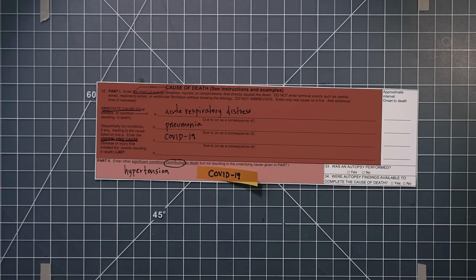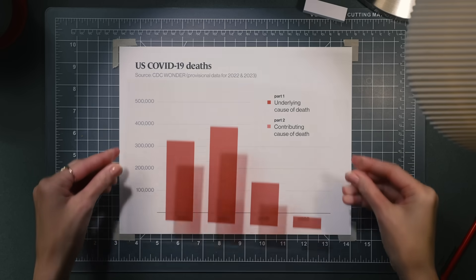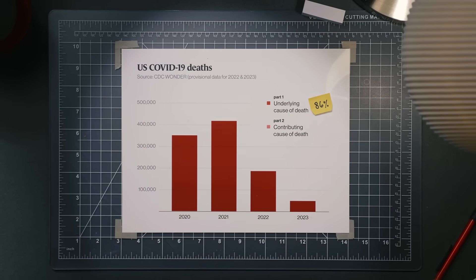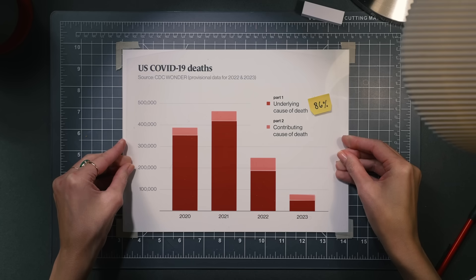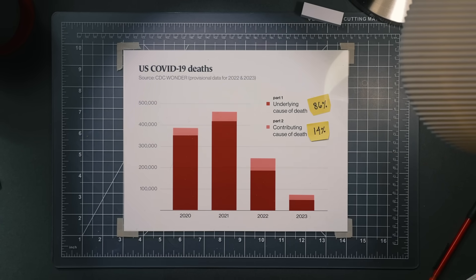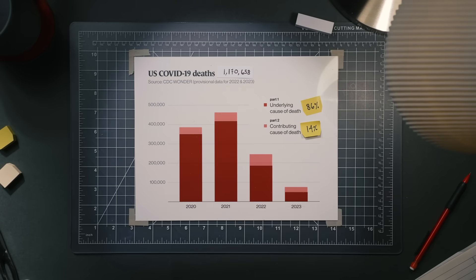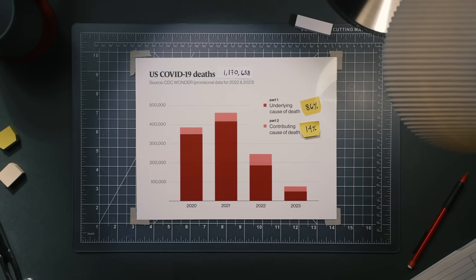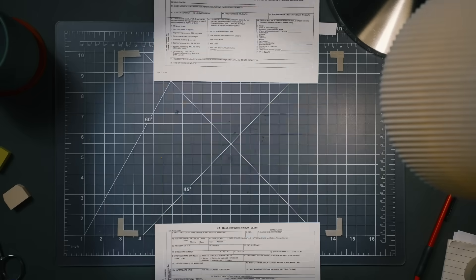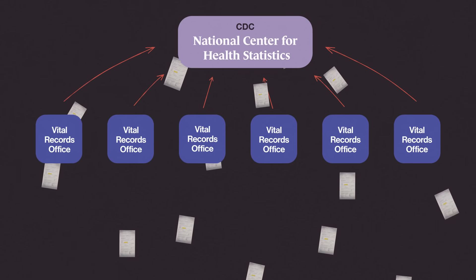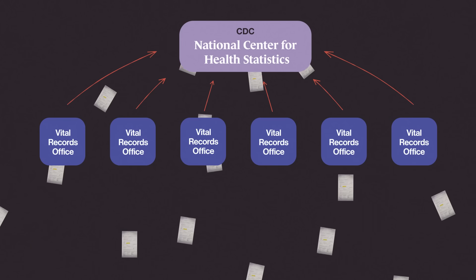If you poke around in their data, you can figure out the exact breakdown. 86% had COVID listed as the underlying cause of death — that's part one. 14% had COVID as a contributing cause in part two. So that's the short answer. Our death count comes from more than a million individual judgments made by doctors, medical examiners, and coroners all over the U.S. Those death certificates flow every day to state and local records offices and then to the National Center for Health Statistics at the CDC, which counts them up. It's a pretty good system — it's been in place for many decades — but it doesn't mean the data is perfect.